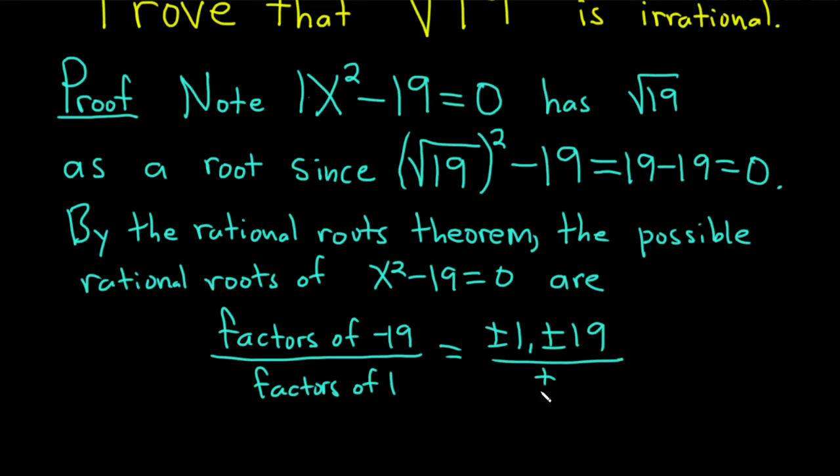And the factors of negative 19 are plus or minus 1 and plus or minus 19. The factors of 1 are plus or minus 1. So you're just going to get 1 over 1, so you get plus or minus 1, and 19 over 1, so you just get plus or minus 19.